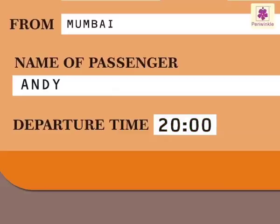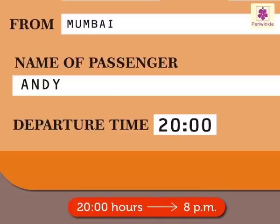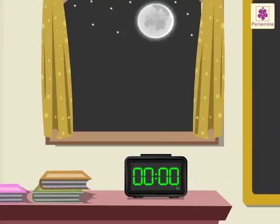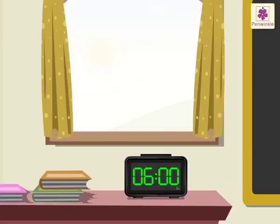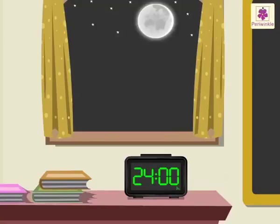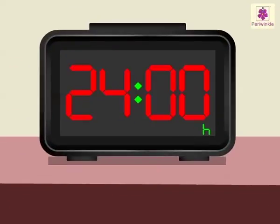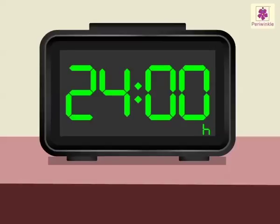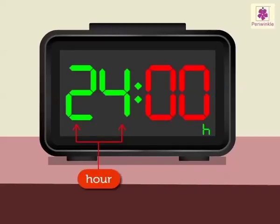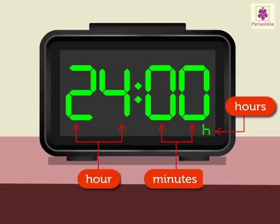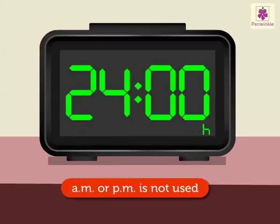It means departure time is 8 o'clock in the evening, i.e. 8 PM. The 24-Hour Clock starts at 0 hours and ends at 24 hours. Four digits are used, followed by the letter H. The first two digits show the hours, and the next two digits show the minutes. AM or PM is not used.